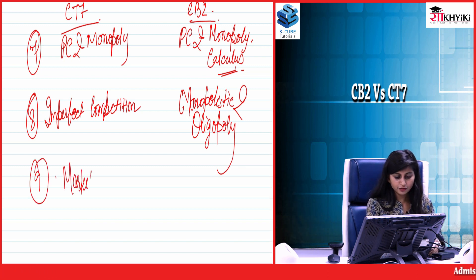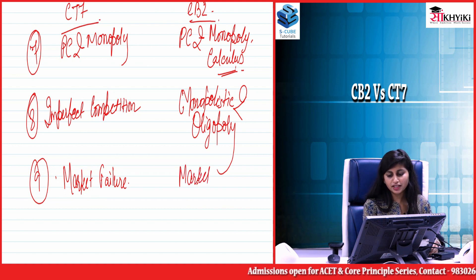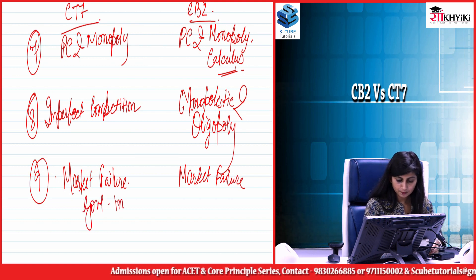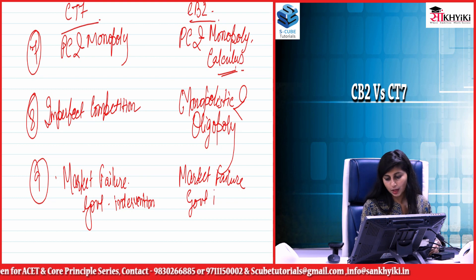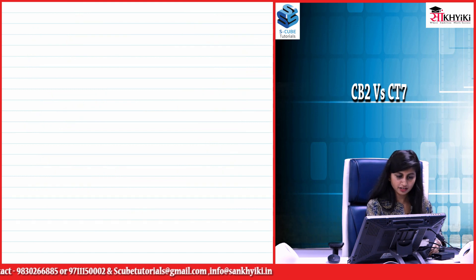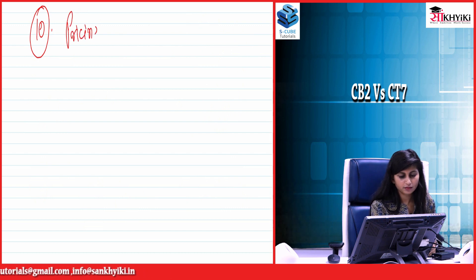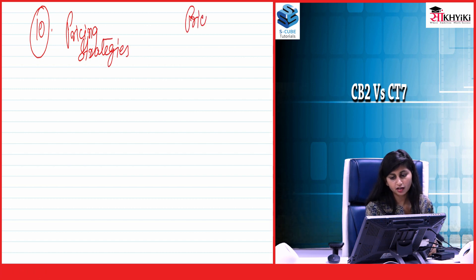Market failure in CT7 is repeated in CB2 as Market Failure and Government Intervention. This chapter does not see much change since the reasons for market failure and government intervention remain the same, and there is no calculus in this part. The chapter on pricing strategies is also similar but is covered in much more detail in CB2.